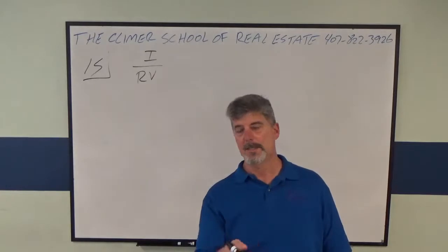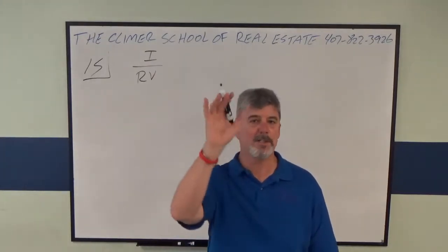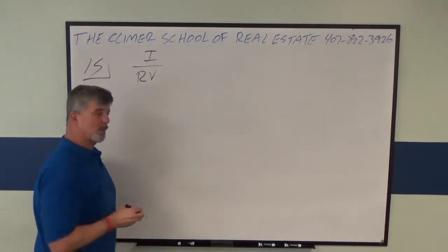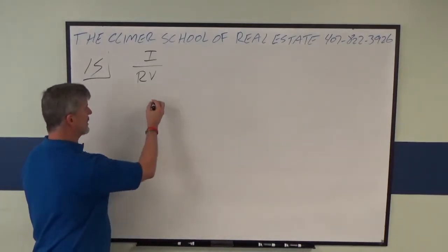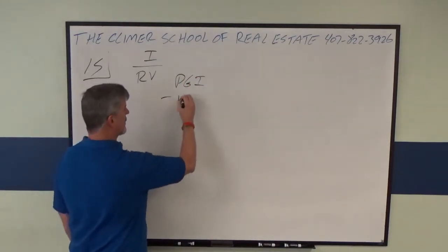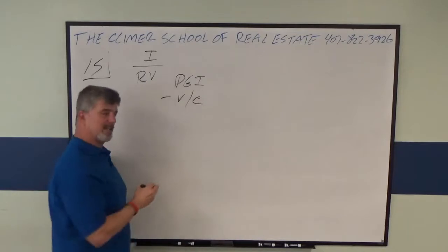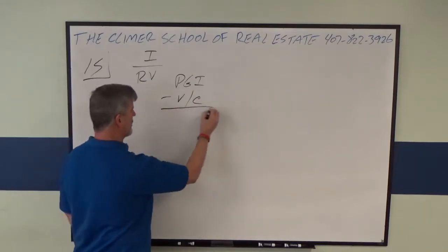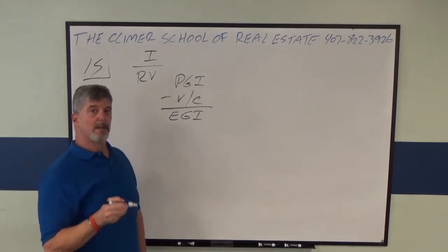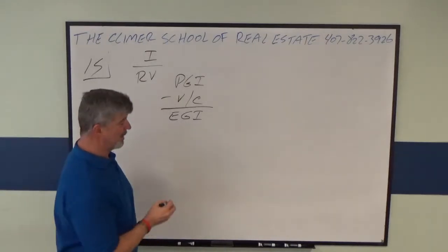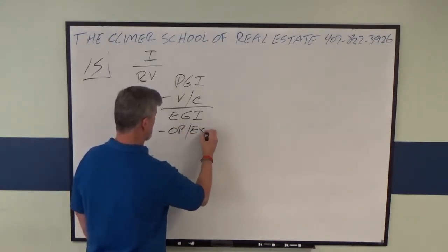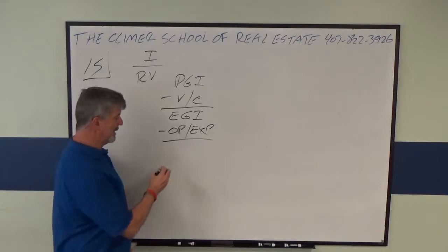First, you got to be able to do the income capitalization flow. So let me write it up here. Starts with potential gross income minus vacancy and collection losses gives you effective gross income. Effective gross income minus operating expenses, that gives you net operating income.